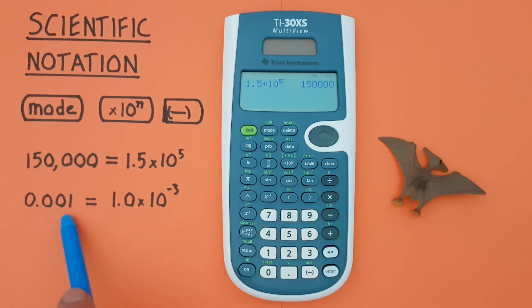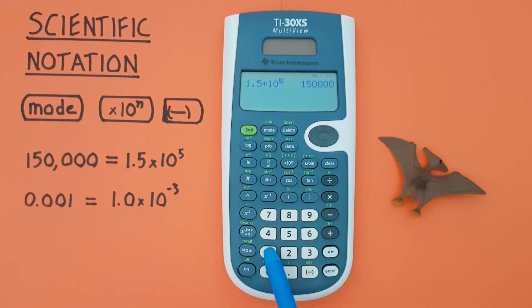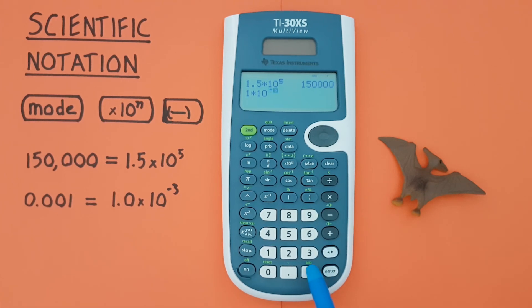Again for small numbers, if we wanted 0.001 or 1 times 10 to the power of negative 3, we could enter the 1 times 10 to the power of and then we want the negative 3. Again, important not to use the subtraction sign here, that's different. And press enter.